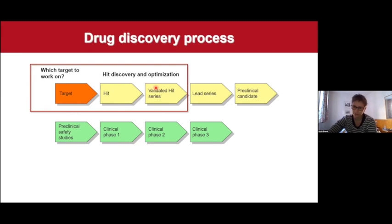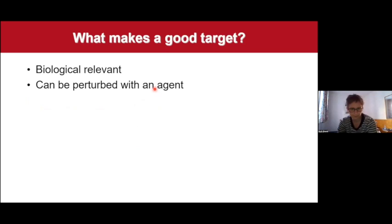If you think about the target, what makes a good target? First of all, it has to be biologically relevant. In the area of antibiotic drug discovery, if you disturb the target, you have to kill the bacteria — the bug. In order to do this, we need to be able to perturb the target with an agent. Very often in the area of antibiotics, we want to have small molecules, compounds that the patient can just swallow and that can then kill the bacteria.